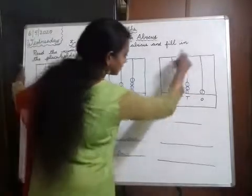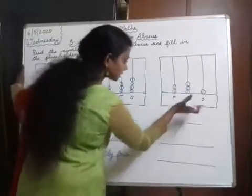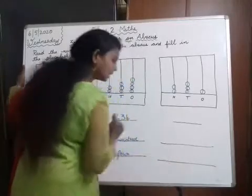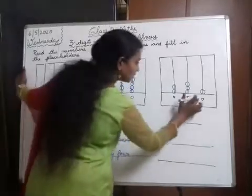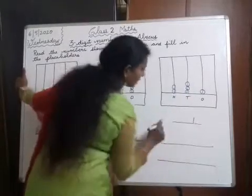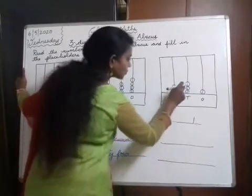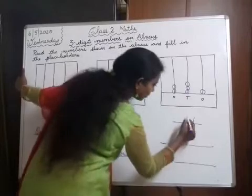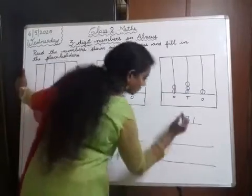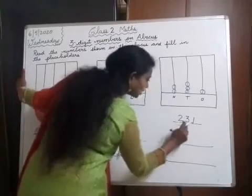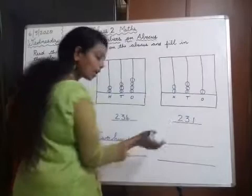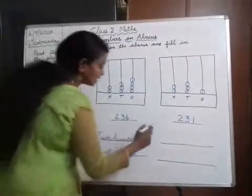Next, see the Abacus. First, we have to write the number and the number name. In the 1s place, how many balls are there? 1. In the 10s place, count — 3 balls are there. Next, in the 100s place — 2 balls. So, 231. The number is 231, and now we have to write the number name for this.